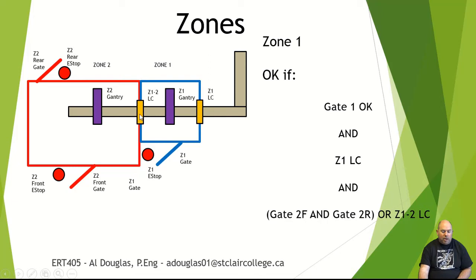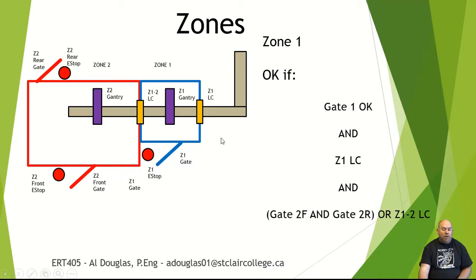The other side of the cell is made up by the zone one-two light curtain. Zone one's perimeter is still okay if that light curtain is breached, as long as the entire zone two perimeter is intact. So if this light curtain is broken but the rear gate and front gate of zone two are both okay, we effectively have one big fenced-in area and it doesn't matter what's going on between the two zones. This is how boxes can travel between zone one and zone two without interrupting safety flow.